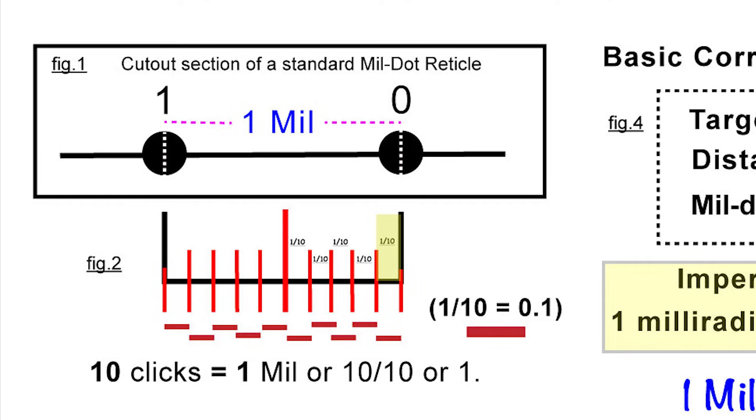For each click, I'm changing my elevation up or down 0.1 mil. So you can see here that if you go 10 clicks, that's a full mil. And if you just do one click, then you're doing one tenth or 0.1 mil change.